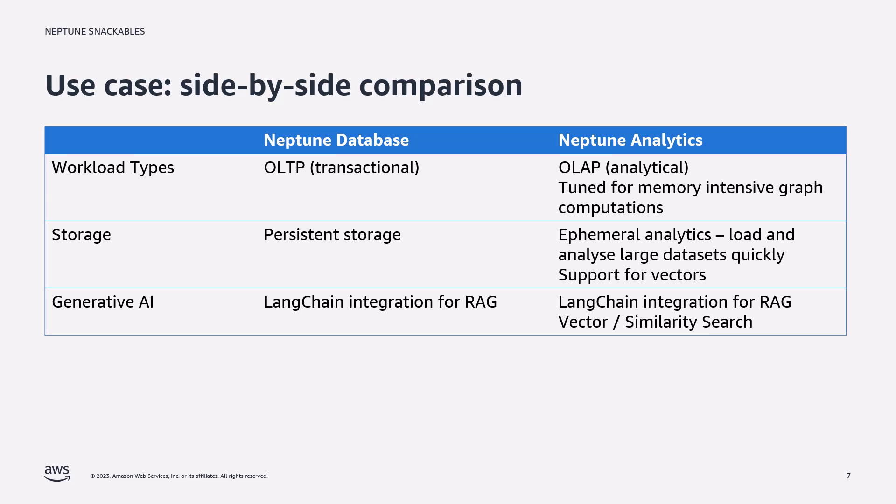From a storage perspective, Neptune database supports a shared storage architecture providing data access to all instances within the cluster. As Neptune Analytics is memory-based, it supports workloads that use graph analytics ephemerally — for example, quickly loading data from S3 or Neptune database, running graph algorithms across the data, and then closing it down.